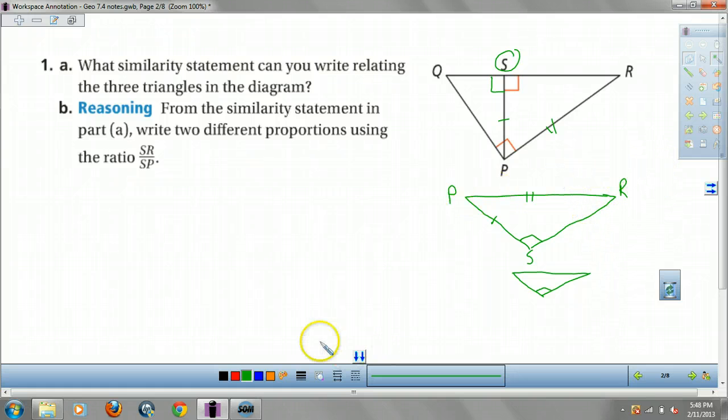Now, my little guy, my littlest triangle, my right angle is still S. My short side is SQ. And my hypotenuse is QP.